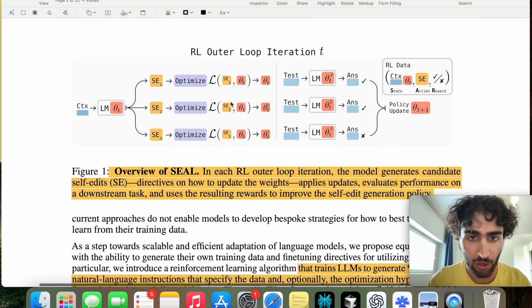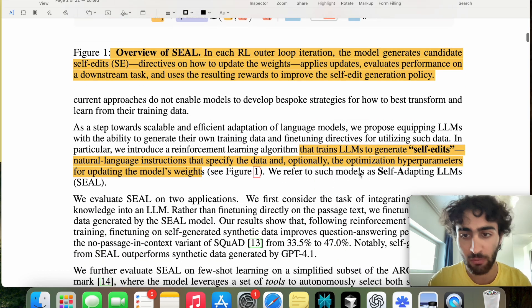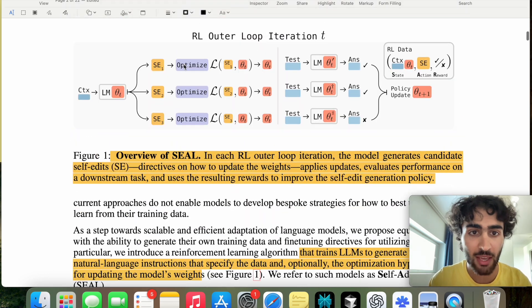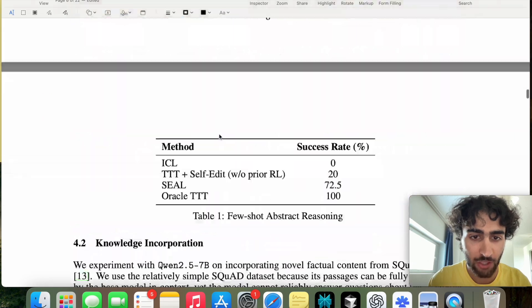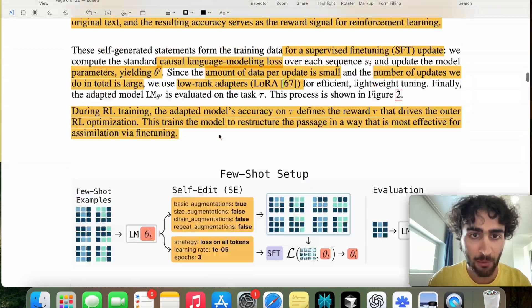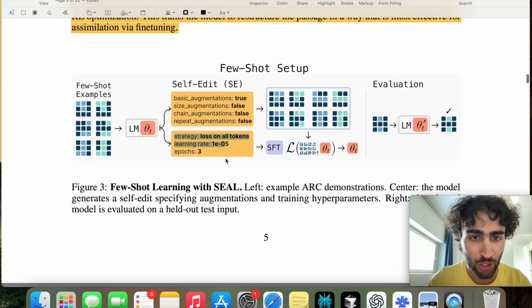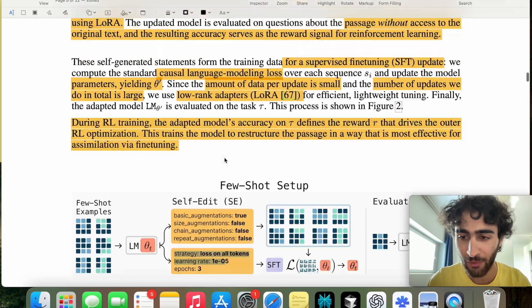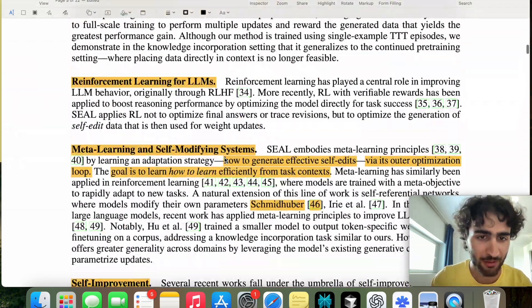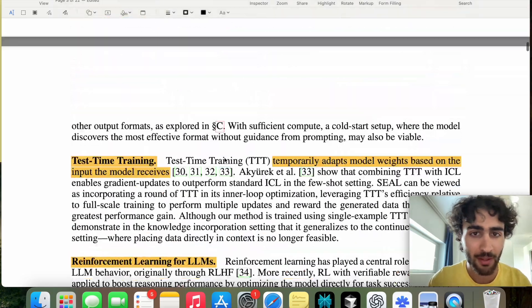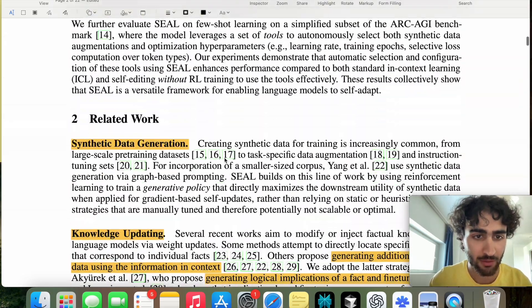So this is figure one right here. And we refer to such models as self-adapting LLM SEAL. So in this case, they do have an example where they literally specify the parameters for fine-tuning as well. Like literally it says here, learning rates, e to the power of negative five, which I find quite interesting. And we will talk about that very soon.